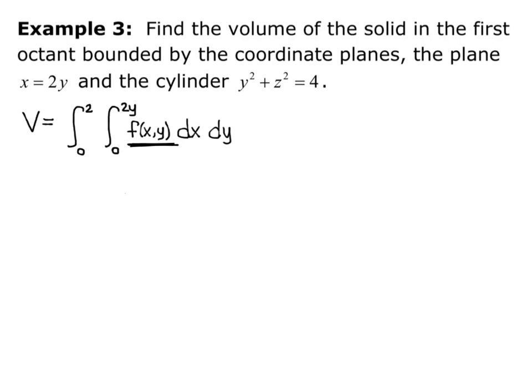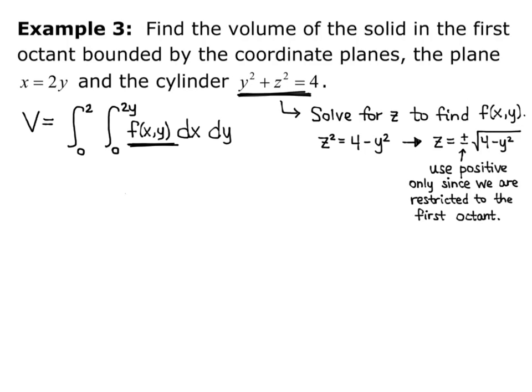Now to find our f of x, y, we're going to take the y squared plus z squared equals 4, and solve for z to find f of x, y. So z squared equals 4 minus y squared. Take the square root of both sides to solve for z. z equals plus or minus the square root of 4 minus y squared. And remember we're bounded in the first octant, so we're going to use the positive only since we're restricted to the first octant. So my z is going to be the positive square root of 4 minus y squared.